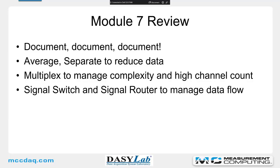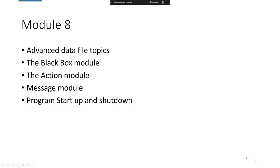To review Module 7: document, and back it up. We looked at averaging and separating data to reduce data and perform average computations. We looked at multiplex to manage complexity and high channel counts. We reviewed the signal switch and signal router modules for techniques to manage data flow. In Module 8, we'll cover advanced data file topics: the black box module, the action module, the message module, and program startup and shutdown.